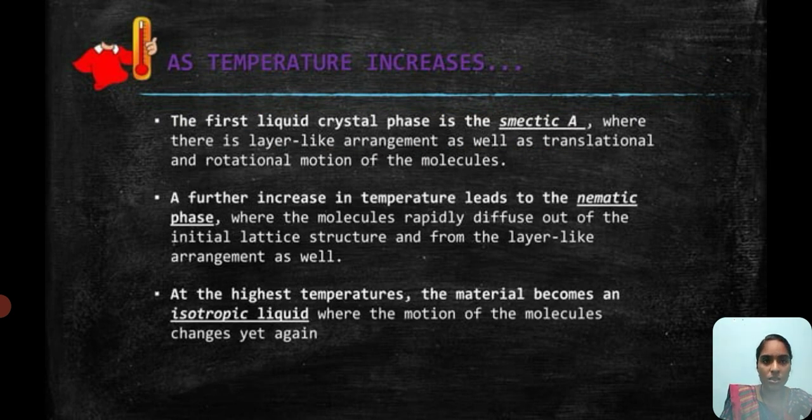As the temperature increases, the first liquid crystal phase is smectic, where there is a layer-like arrangement as well as translational and rotational motion of the molecule. A further increase in temperature leads to the nematic phase where the molecules rapidly diffuse out of the initial layer and from the layer-like arrangement as well. At the higher temperature, the material becomes an isotropic liquid where the motion of the molecules changes yet again.